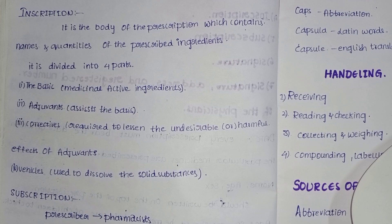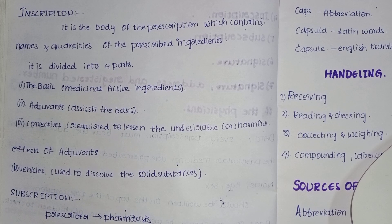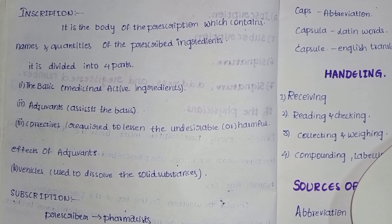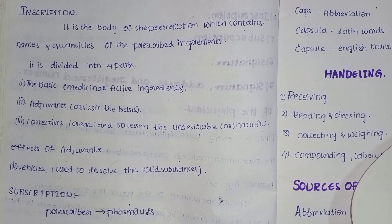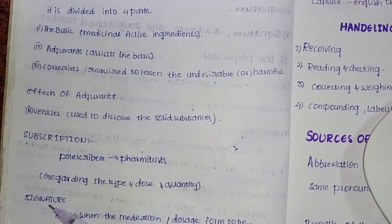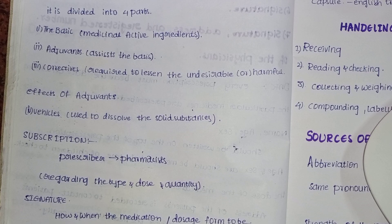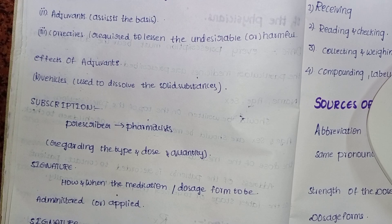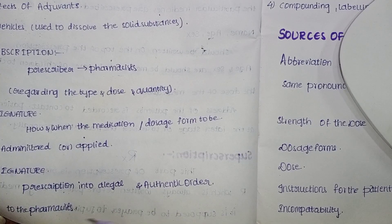And next, subscription. Subscription is the direction from the prescriber — that is the doctor — to the pharmacist regarding the type of medication and dose and quantity — whether it is solid, liquid, or semi-solid — and the quantity. Here, signature is how and when the medication or dosage forms are to be administered. For a prescription to be valid, the doctor's signature is definitively required — only then it is valid and legal.